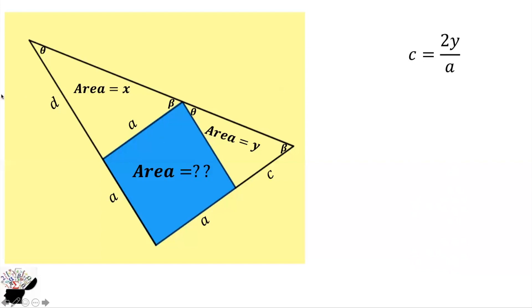From there we already know a squared equals cd. So we put the value of c and also d into this equation. We are going to get 2y divided by a multiplied by 2x divided by a, so we get a raised to the power 4 equals 4xy. Now we are finding a squared, the area of the square.